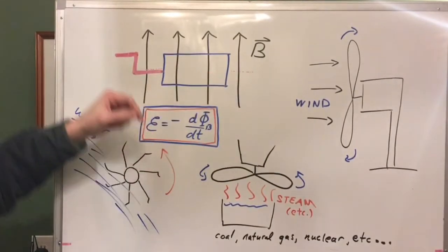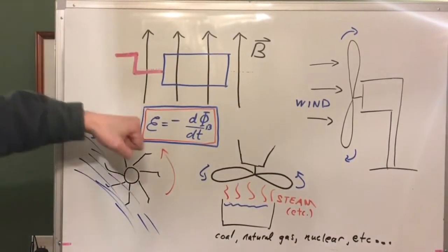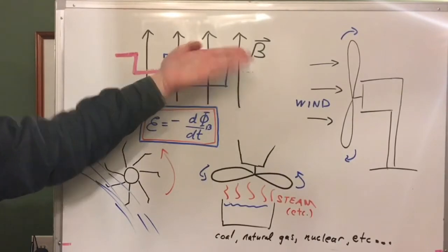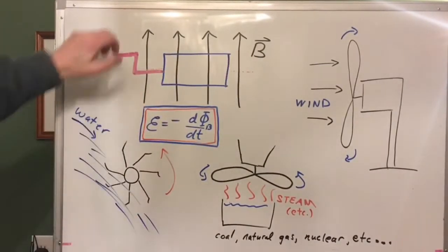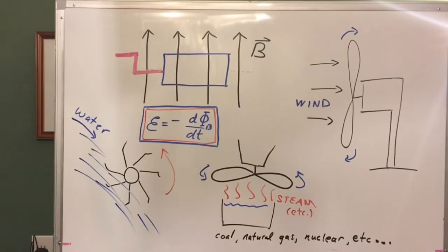The faster you rotate the loop, the faster you're going from no flux to maximum flux and so on. You just turn the loop.